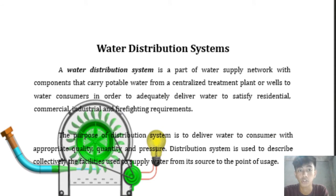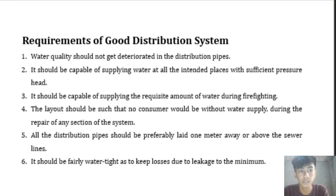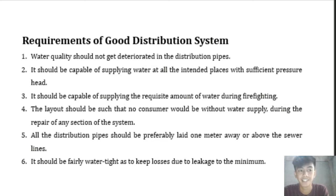The purpose of the distribution system is to deliver water to consumers with appropriate quality, quantity, and pressure. Here are some requirements of a good distribution system: first, water quality should not deteriorate in the distribution pipes; it should be capable of supplying water at all intended places with sufficient pressure head; and it should be capable of supplying the requisite amount of water during firefighting.